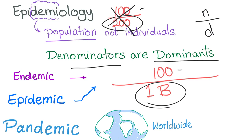Let's turn our attention to endemic, epidemic, and pandemic. Endemic usually involves a small population, such as one town, one city, or maybe one country, and the rate of the disease is pretty stable. For instance, Bilharziasis is endemic in Egypt — meaning Egypt is a single country and Bilharziasis is stable there; it's not increasing or decreasing.